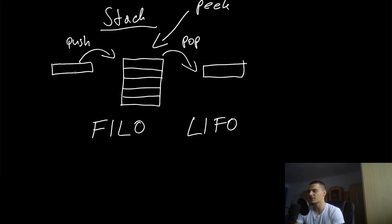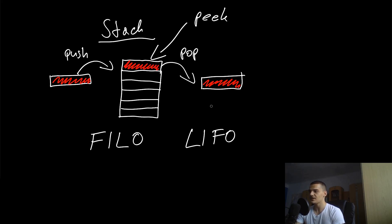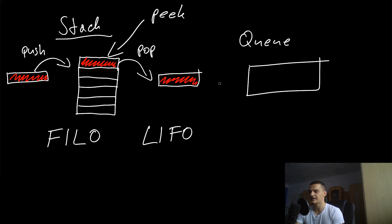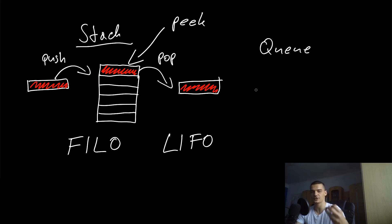LIFO essentially means that what enters the stack first leaves it last, and what enters last leaves first. For example, if we push a red box onto the stack, the red box becomes the top element. When we then pop, we get that red box back. This is different from a queue, where what enters first also leaves first — with a stack, what enters first leaves last.